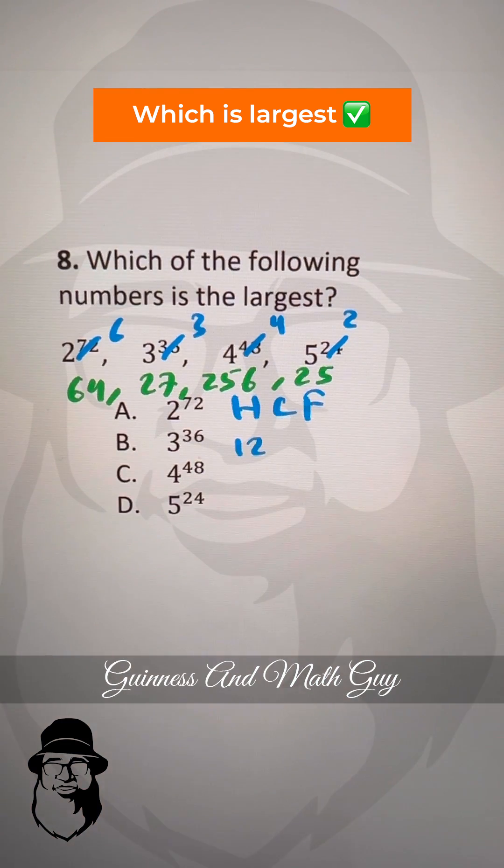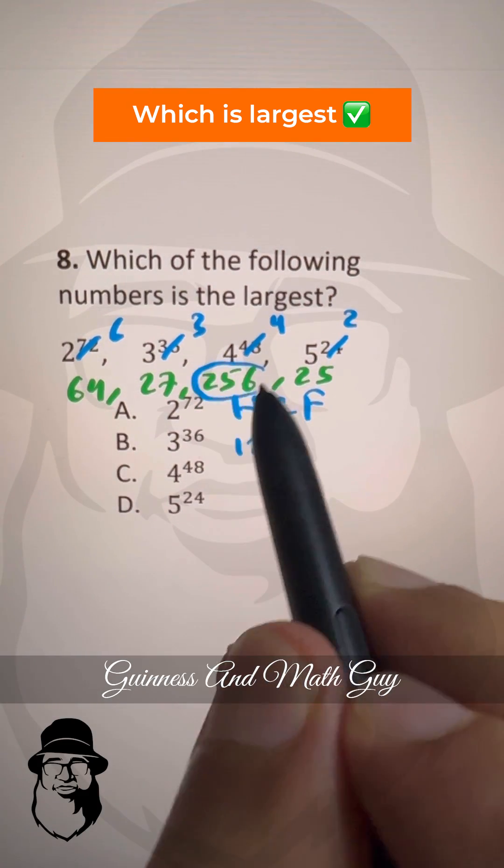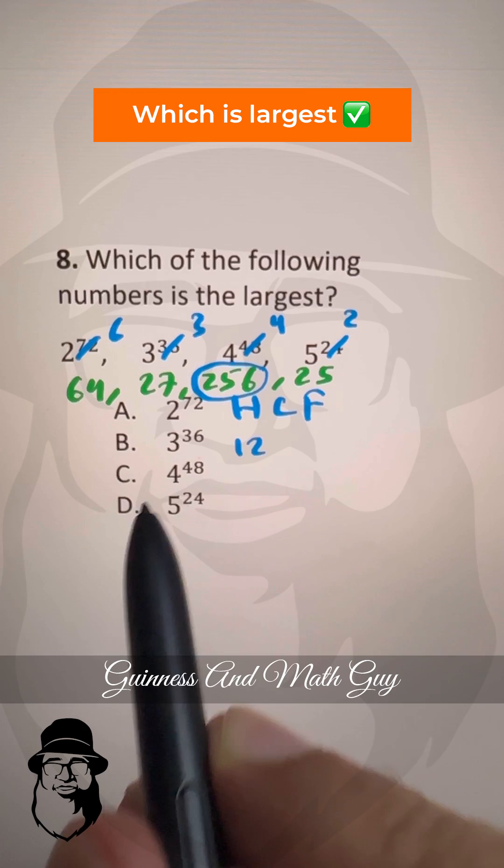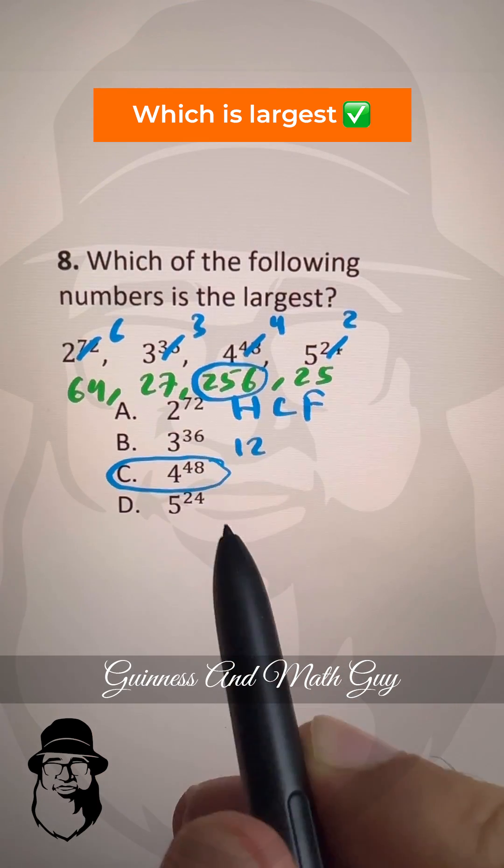Now we can see that the largest here is 256. It means 4 to the power 48 is the largest. That's choice C, our answer.